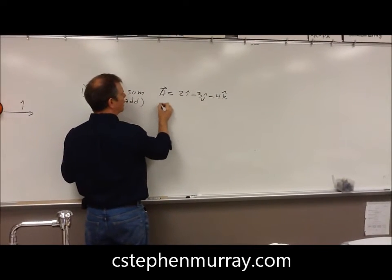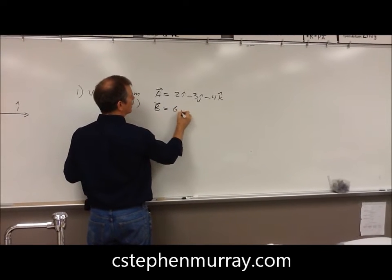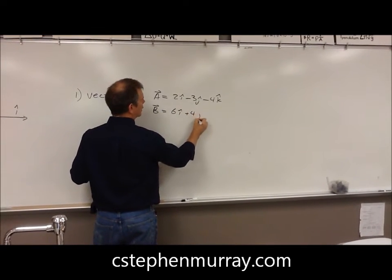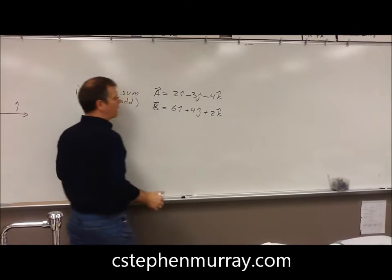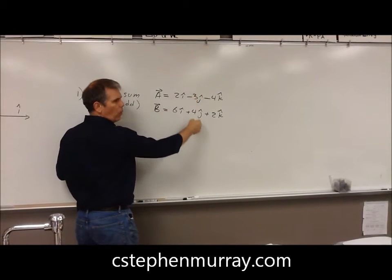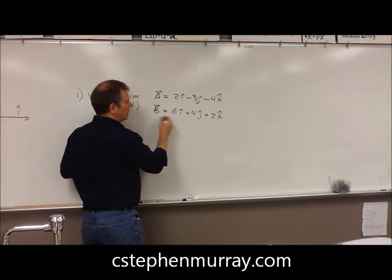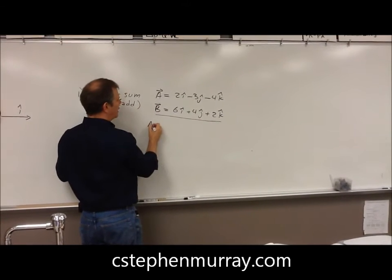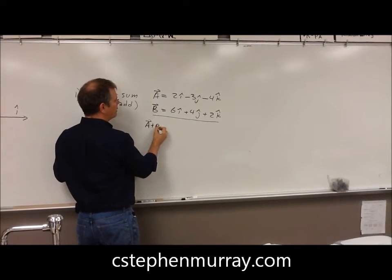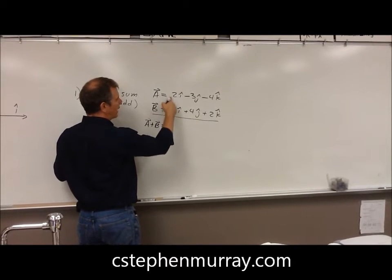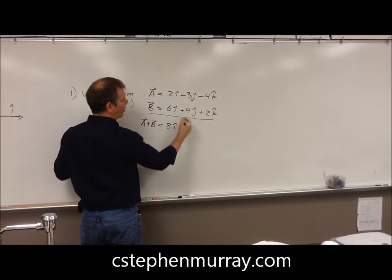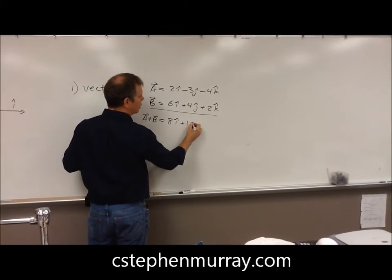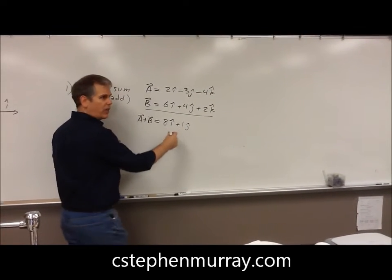And let's say that b vector, that is x, y, z. The sum of those, which would be a plus b equals, add all the x's, add all the y's. You could remove the one and just have j-hat there.